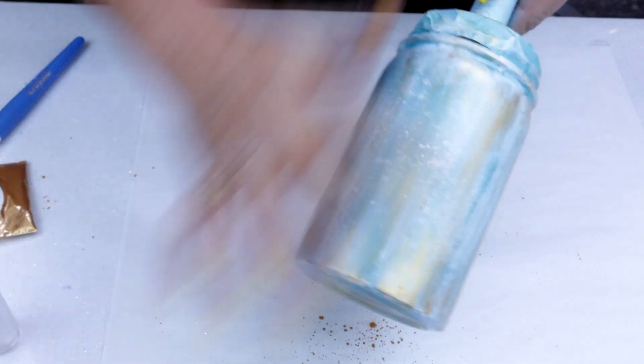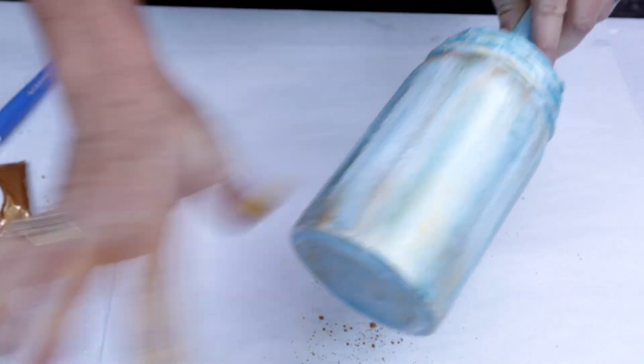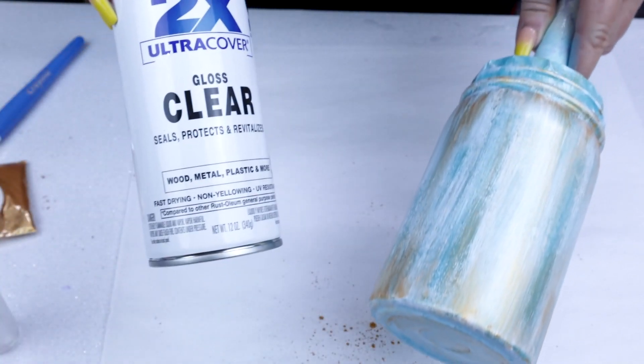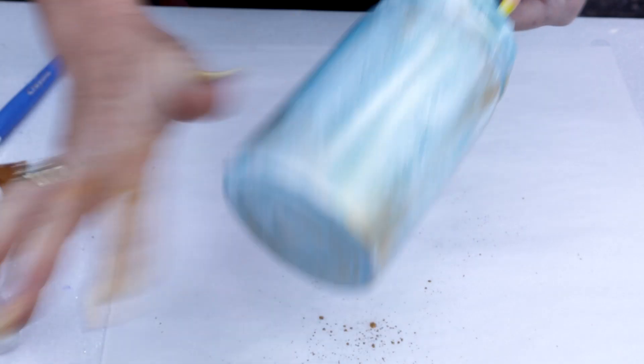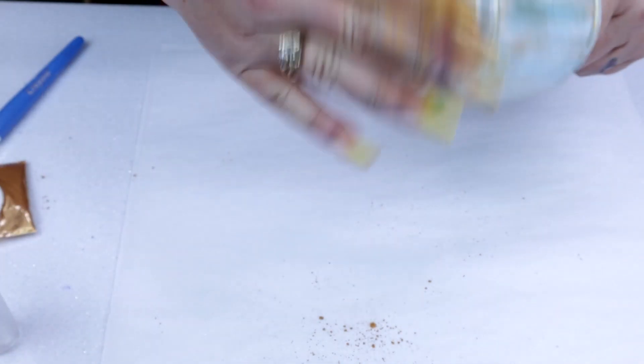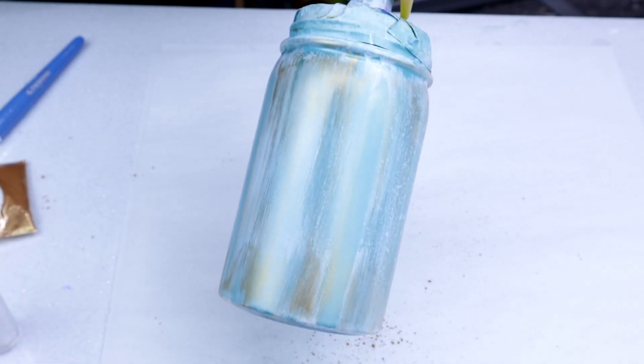Blow off any extra powder that remains. Now I'm going to go ahead and seal this with Rust-Oleum gloss before I epoxy this. Stay tuned, we'll be right back for the next step.